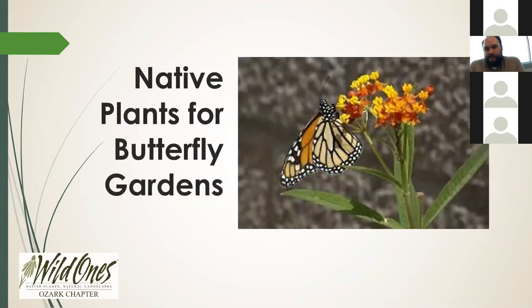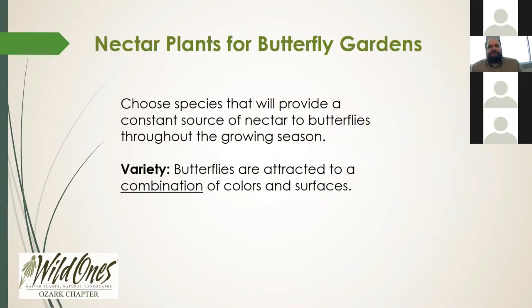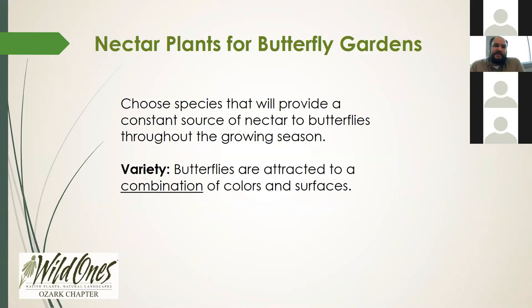What about some native plants for butterfly gardens? I'm going to focus on which native species are good to plant for monarchs and pollinators. We have two types of plants to consider for butterflies: nectar plants and host plants. Nectar plants provide food during migration. We want to choose species that provide a constant source of nectar throughout the growing season — some flowering early spring or early summer, others not until late summer or early fall — so you have a combination providing constant nectar from about March or April through October. Butterflies are also attracted to a combination of colors and flower forms, so the more variety, the better.